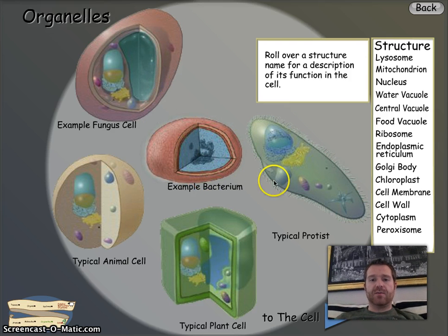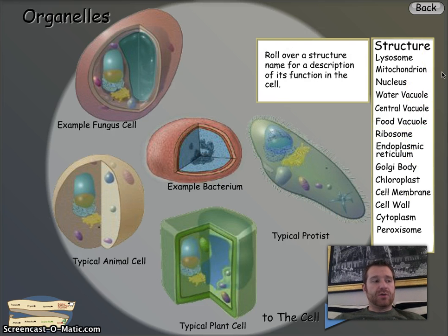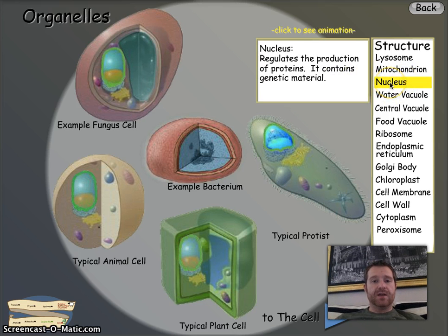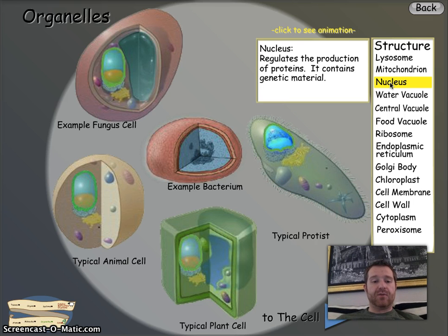If you remember this screen, this was from the Ribbon of Life activity, and the two specific cells we're looking at are the animal cell and the plant cell. I'm going to go through each one of these parts and talk about what they do and if they're in an animal and a plant cell. The first one on your sheet is the nucleus. The definition says it regulates the production of proteins and contains genetic material. All you need to know is it controls the cell — it's like the brain. Both animal and plant cells are highlighted, so it is yes in plant cells and yes in animal cells.